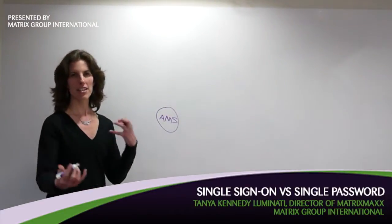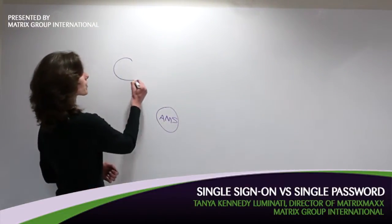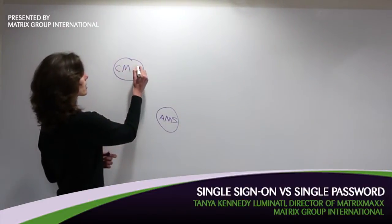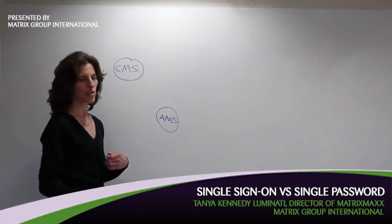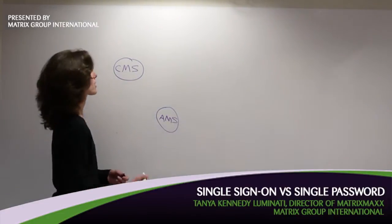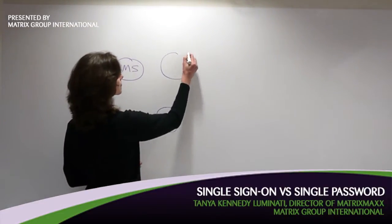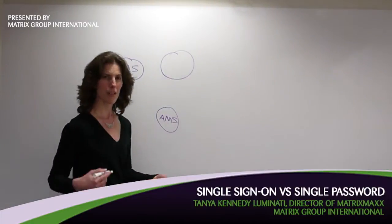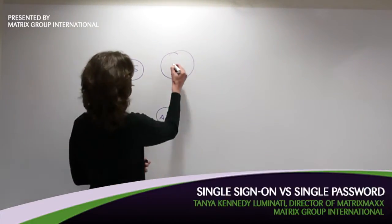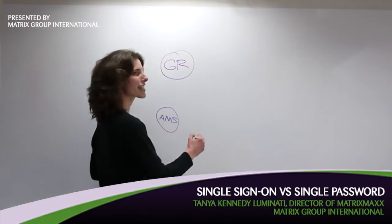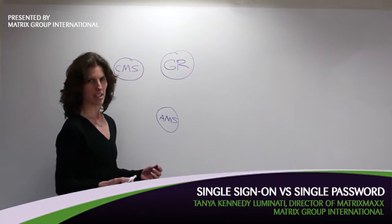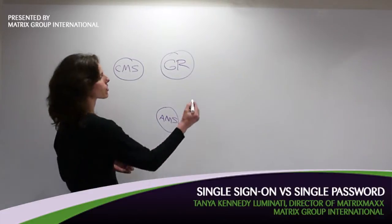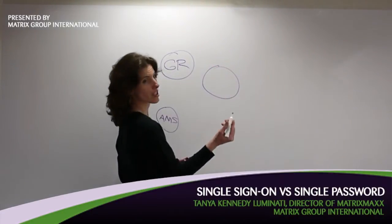And then you've got other systems as well. Almost everyone's going to have some type of content system — a CMS — that's holding your press releases, your news, your white papers, your data, powering your website. There are a lot of other systems that come into play too. A lot of people have some kind of GR system, tracking Congress, tracking legislation. They might also have a jobs database.